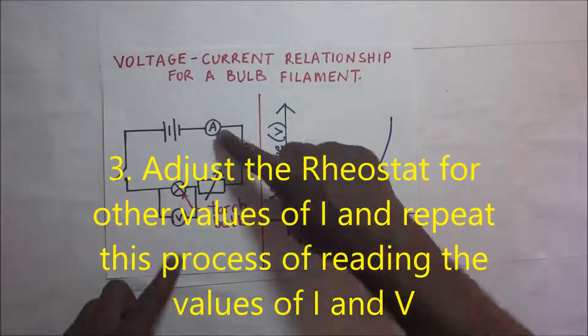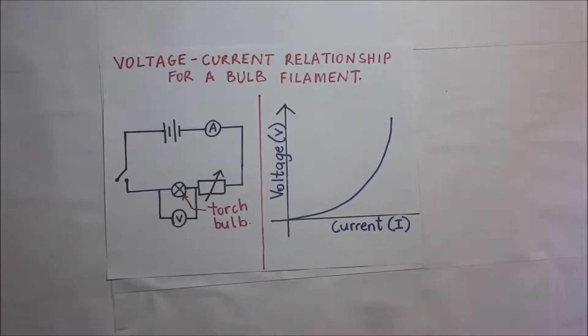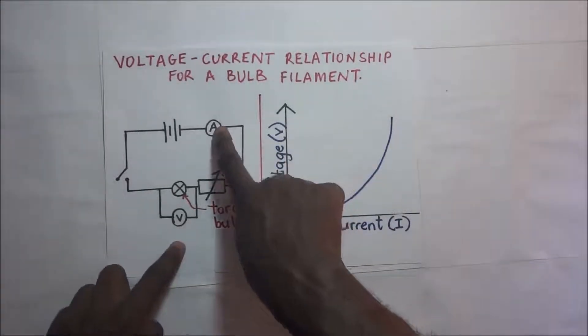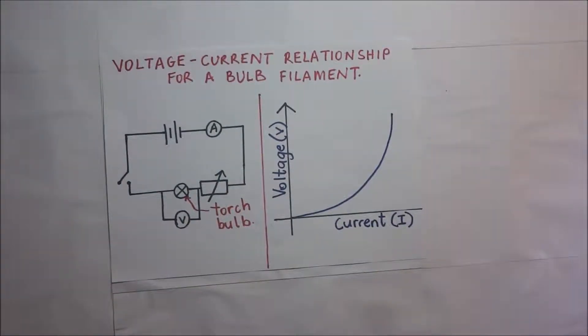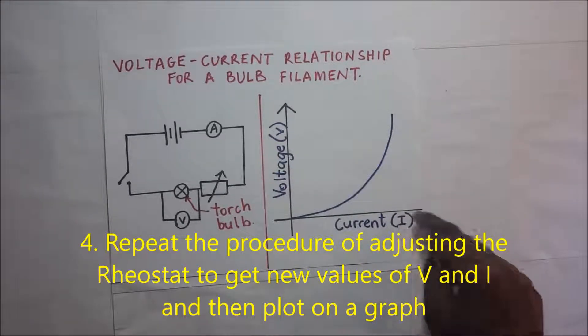Now remember, as we are getting our values of current and voltage, we are supposed to be recording them in a table with a column of current in amperes and another column for voltage in volts. So you will repeat the procedures of adjusting the rheostat to get new values of voltage and current.